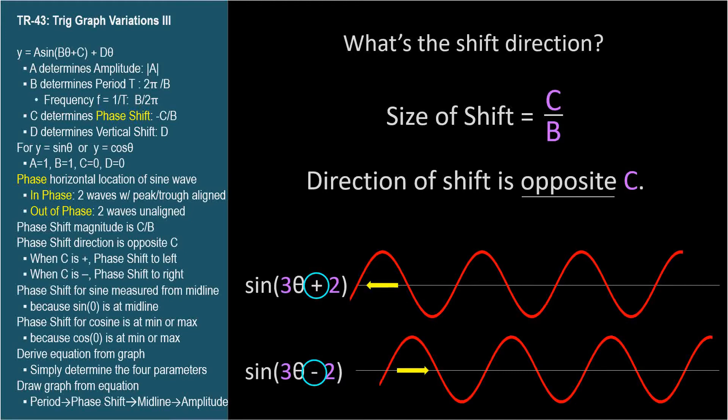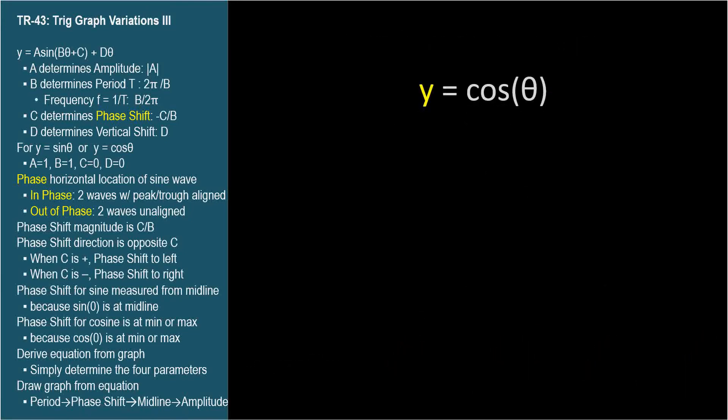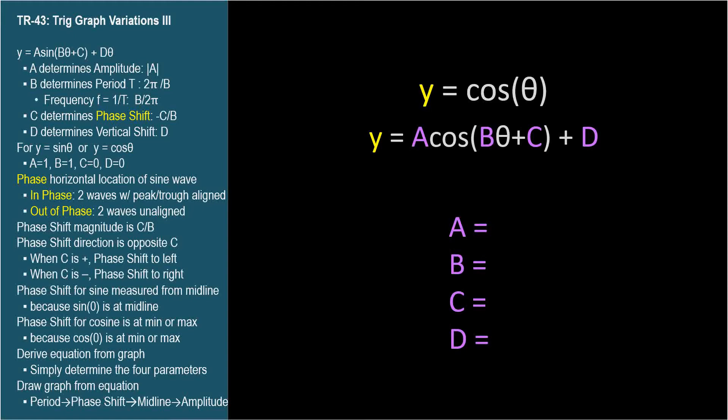Before we solve some problems, let's do a quick check. For the plain unadorned equation y equals cosine or sine theta, what are the a, b, c, and d parameters? I just don't want you to think they're all one or all zero. The coefficients that are multiplied are both one, and the added numbers are both zero. So a and b are one, and c and d are zero.